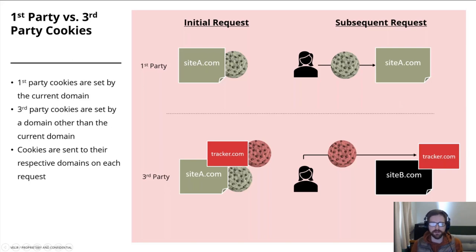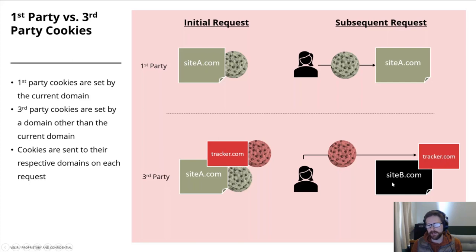Third-party cookies may be a little less well understood. I visit sitea.com and it gives me that same first-party cookie, but sitea.com also loads a pixel or some JavaScript from tracker.com. Tracker.com sets a third-party cookie on my browser. When I then visit siteb.com — which could be CNN or another website — if siteb.com also loads tracker.com, I'll send that third-party cookie to tracker.com. This is what enables third-party tracking, remarketing, firmographic identity resolution — cookies that can exist across multiple different domains.